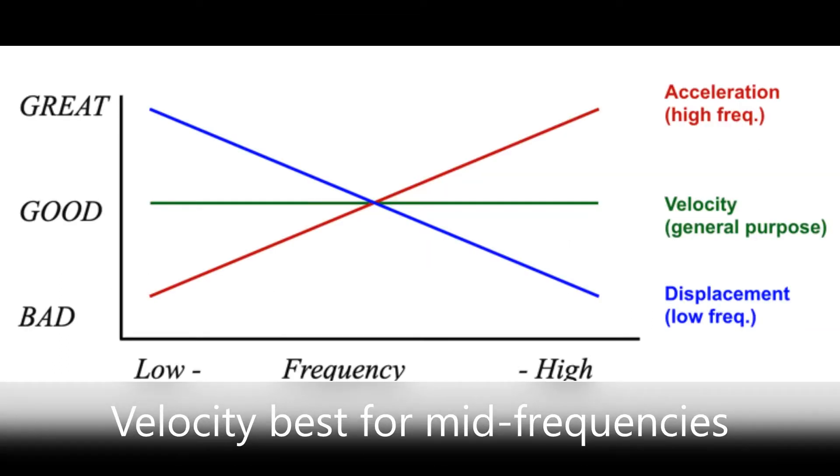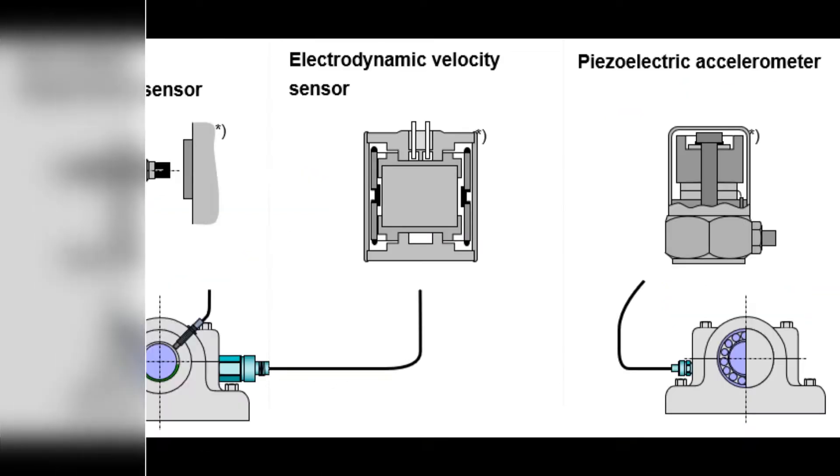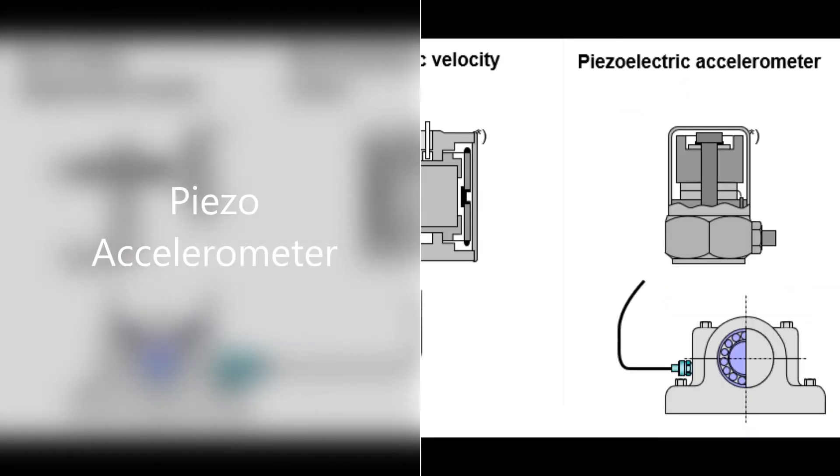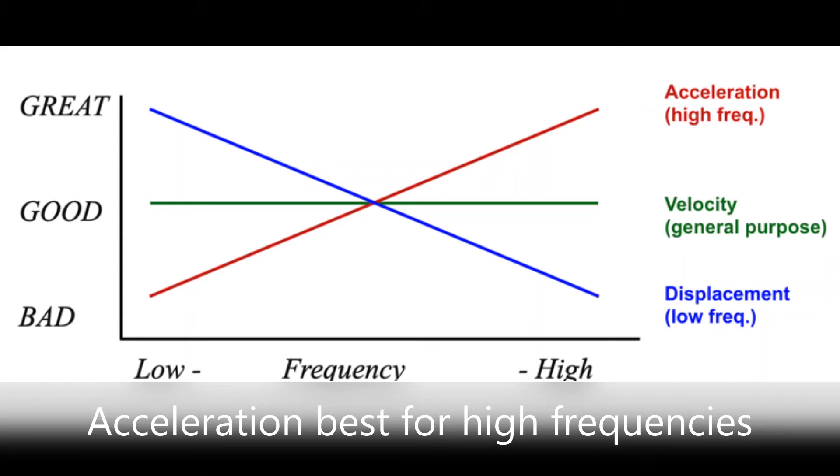This is the most common for most standard rotating machines. Number three: acceleration is the change in velocity over a given time, often measured with an accelerometer. No moving parts, stable over many years, which makes it the best sensor. Acceleration is best for measuring high frequencies. This is common for looking at early warning of roller bearings.